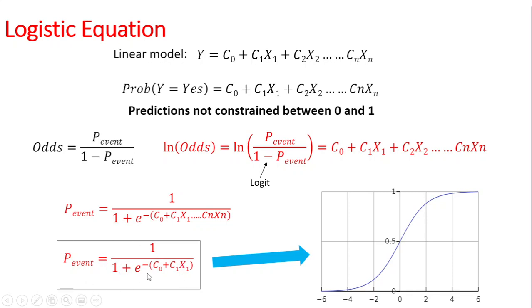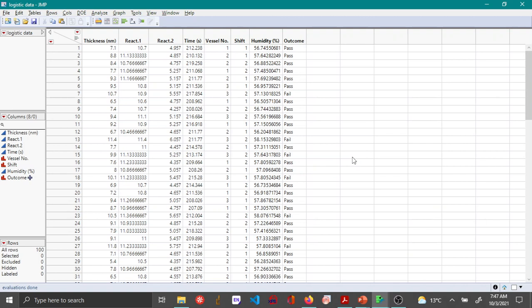This equation can be represented graphically as a curve shown here, and this is called the logistic curve. This is what we'll be using in order to predict the response of variables. Now let me switch over to JMP to see how to do this logistic regression.